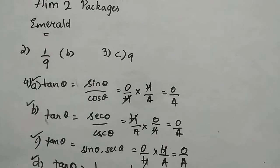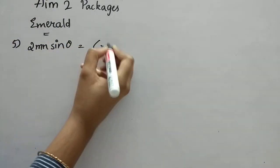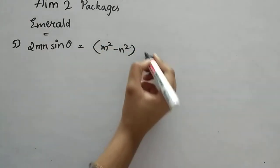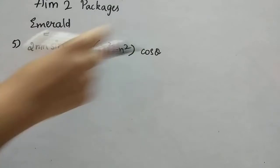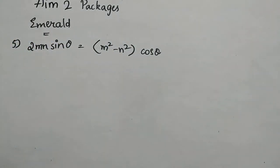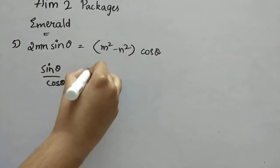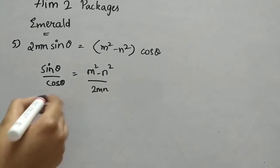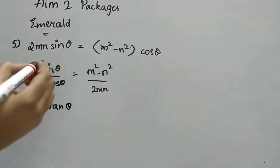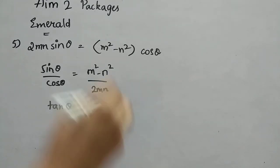Now the fifth question: 2mn sin θ = (m² − n²) cos θ. We need to find the incorrect statement. Rearranging: sin θ / cos θ = (m² − n²) / 2mn. Since sin/cos = tan θ, we get tan θ = (m² − n²) / 2mn. Option B is correct.